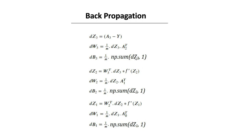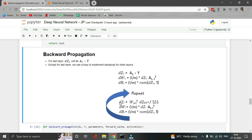For DZ, there's also a pattern for all layers except the last: DZ_l = np.dot(W_{l+1}.T, DZ_{l+1}) * derivative_of_activation(Z_l). For the last layer, DZ_L is simply A_L - Y, whether using sigmoid or softmax. While for all other layers DZ_l = np.dot(W_{l+1}.T, DZ_{l+1}) element-wise multiplied by the derivative of the activation function of Z_l.